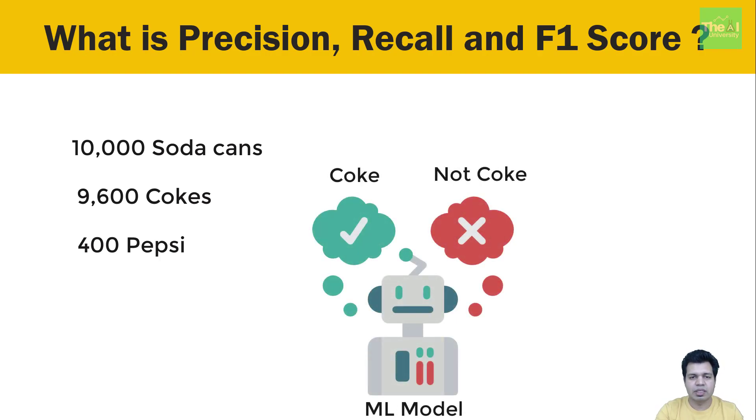Then the accuracy of the model is 9,600 divided by 10,000 equals 96%, which means we have a highly accurate model. But if we use this model to predict soda in the future, it will fail miserably because this model is meant to predict only one class, which is coke.